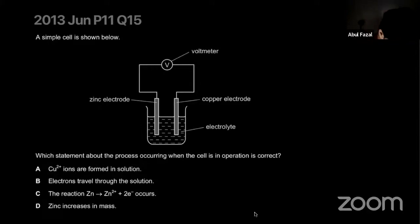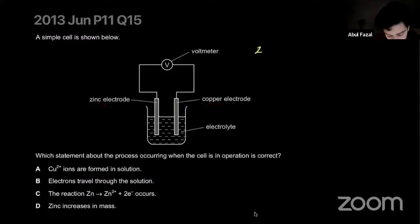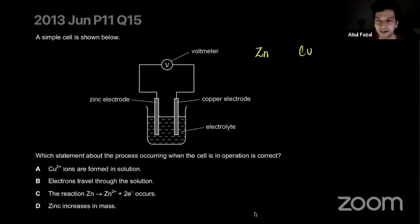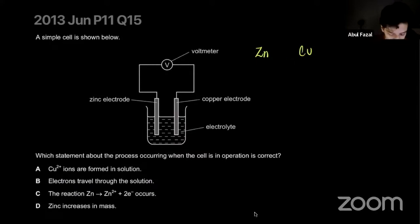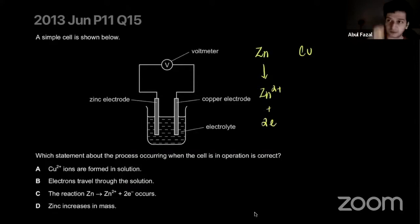Copper ions are formed in the solution — are they? It's the reactivity series. There's zinc on one side and copper on the other. Zinc is higher in the reactivity series; copper is near the bottom, right above gold and platinum. So zinc has a higher incentive to discharge and turn into ions — zinc will turn into Zn²⁺ ions because it's more reactive than copper. On the other hand, copper ions will be reduced back into copper.